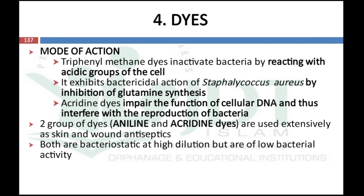The next group is dyes. The mechanism of action differs for each dye. Triphenylmethane dyes inactivate bacteria by reacting with acidic groups of the cell and exhibit bactericidal action against Staphylococcus aureus by inhibition of glutamine synthesis. Acridine dyes impair the function of cellular DNA and interfere with reproduction. There are two groups of dyes used as disinfectants: aniline dyes and acridine dyes. Both are bacteriostatic at high dilution and have low general antibacterial activity.